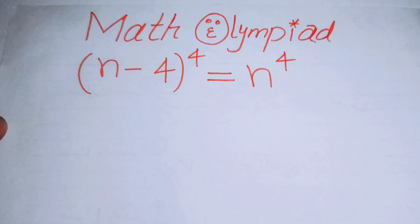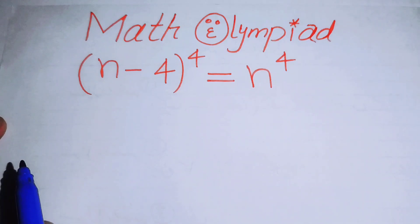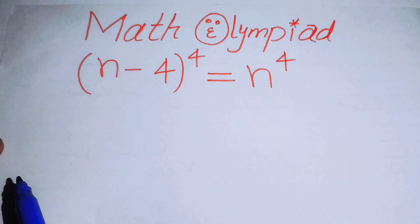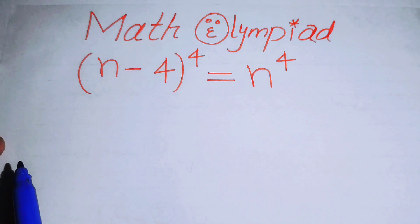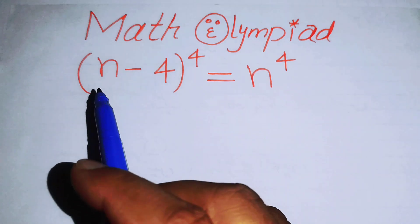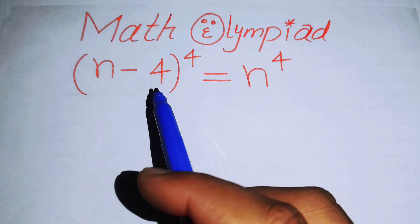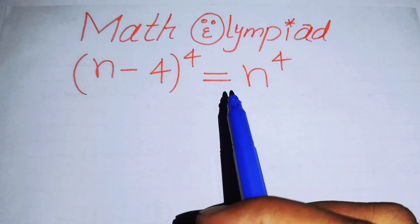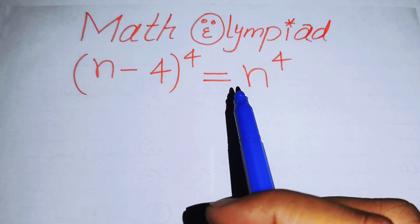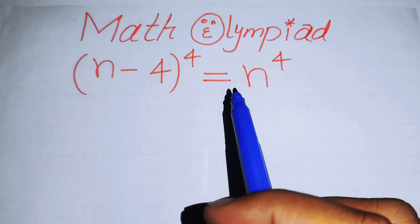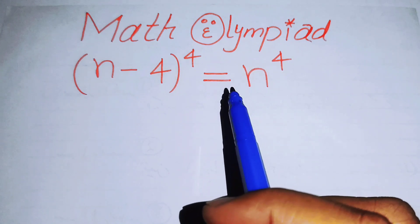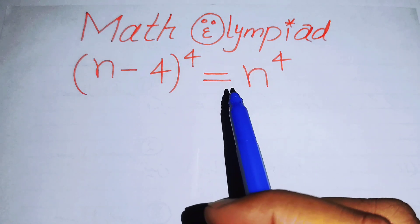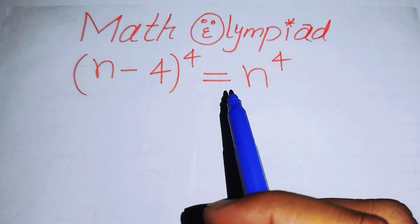Hello everyone, welcome back to the Map of Mathematics. In this video we are going to solve this nice algebra problem: (n minus 4) to the power of 4 equals n to the power of 4. We will solve this problem for the values of n.